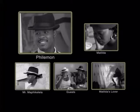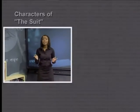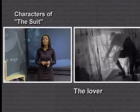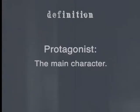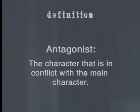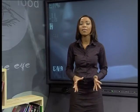The first thing we need to do is make a list of the characters in 'The Suit.' Can you recall the characters from this short story? The characters are Philemon, Matilda, the lover, Mr. Mapikela, and the people who come to the party. Although there are not many characters, the story is really about Philemon and Matilda. The story is told mainly from the point of view of Philemon, as he is the main character. In literature, the main character is referred to as the protagonist. The person that is in conflict with the main character is the antagonist.